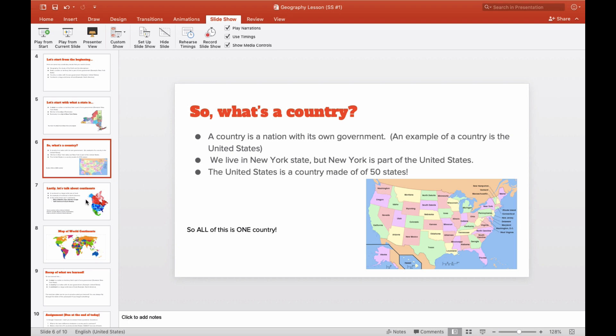So let's talk a little bit about continents. So a continent is a large solid area of land. So this entire thing right here is a continent. This is the continent of North America. So North America is made up of three countries. Canada, the United States, and Mexico. These three countries make up North America.